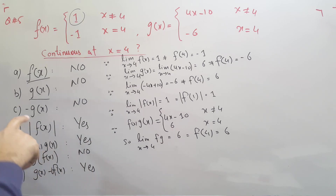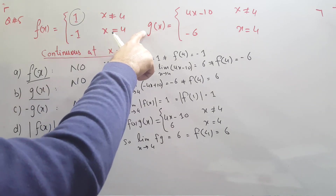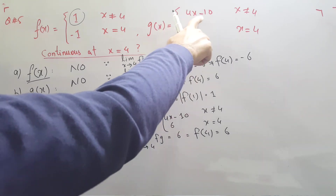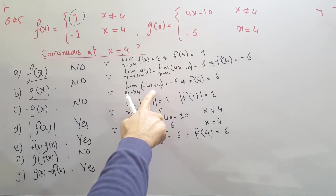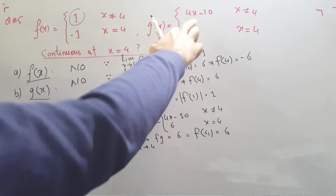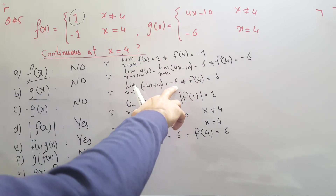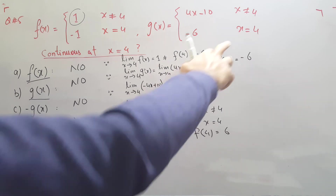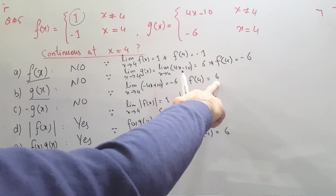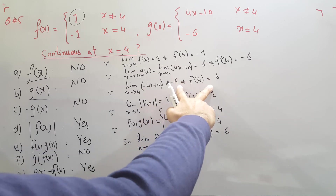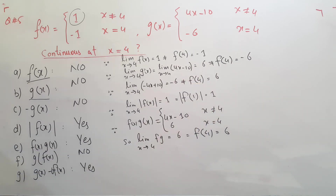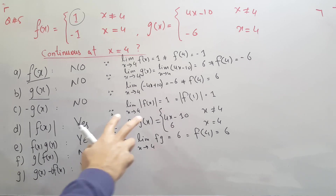They are also asking about −g(x). Multiplying g(x) by −1 gives −4x + 10x + 6. The limiting value of this gives −6, and the value of −g(x) at x = 4 is +6. Since these are not equal, the function −g(x) is not continuous at x = 4.